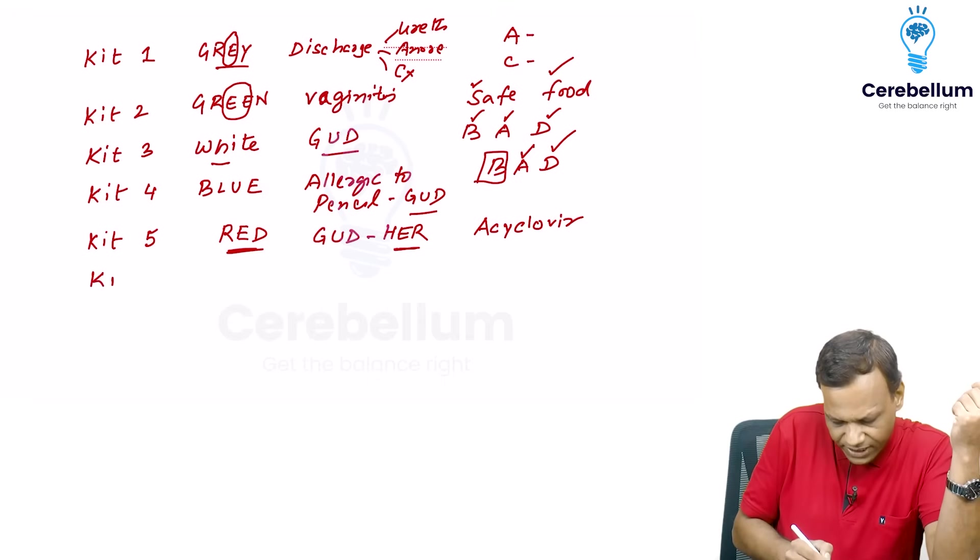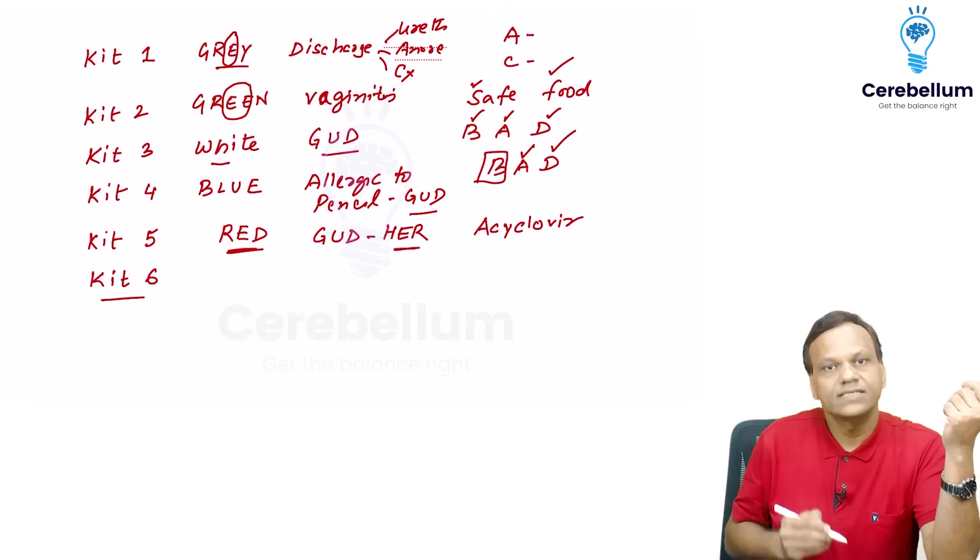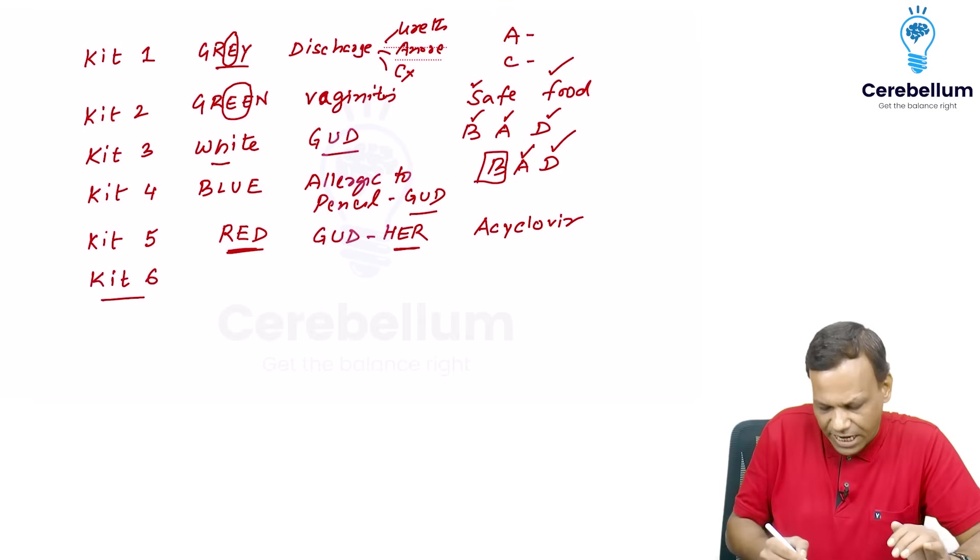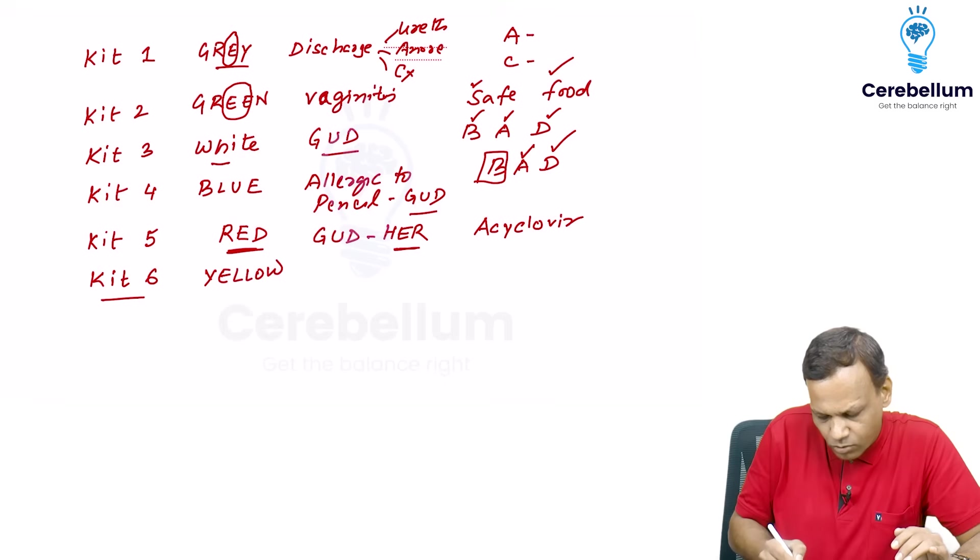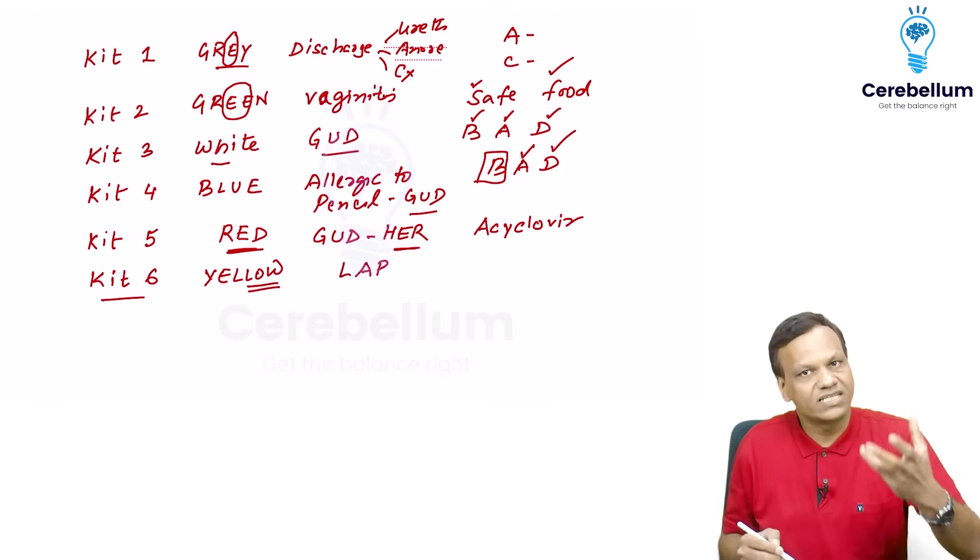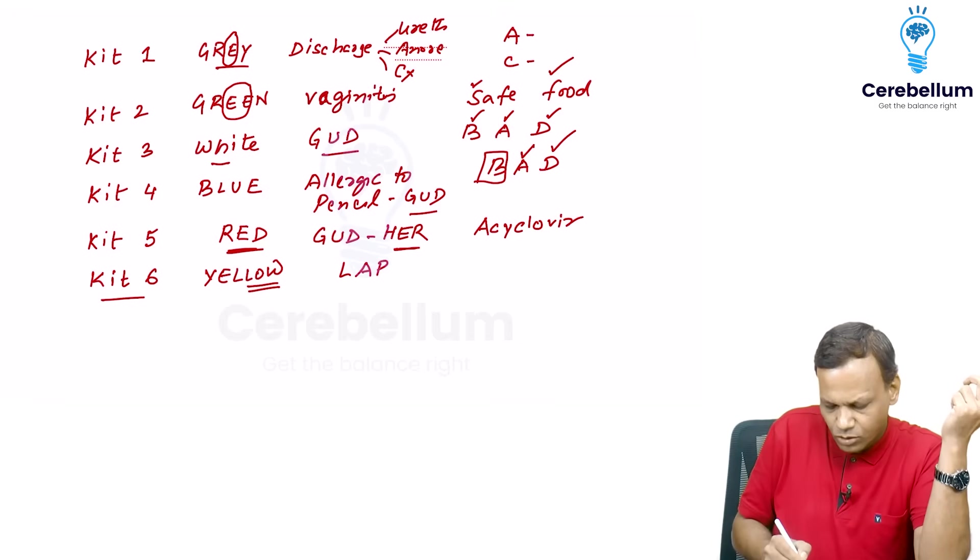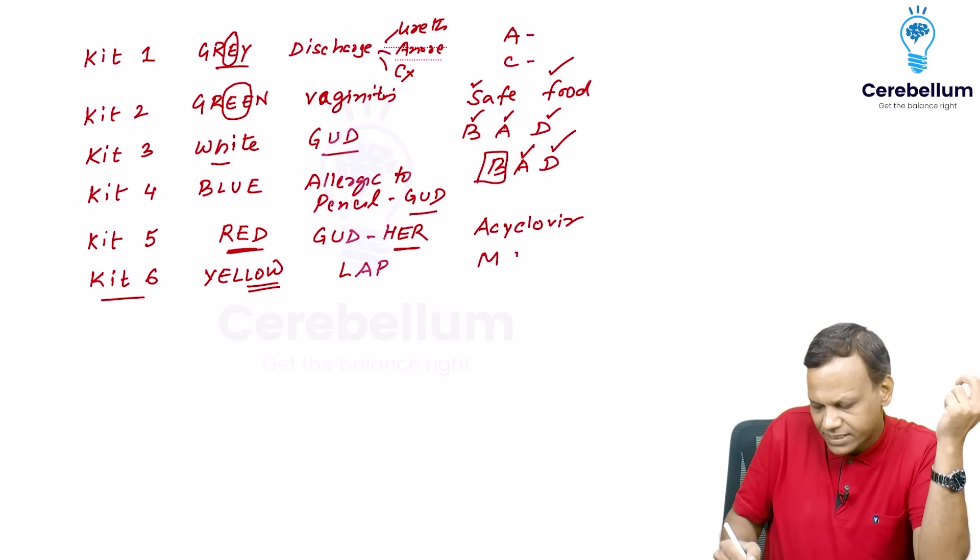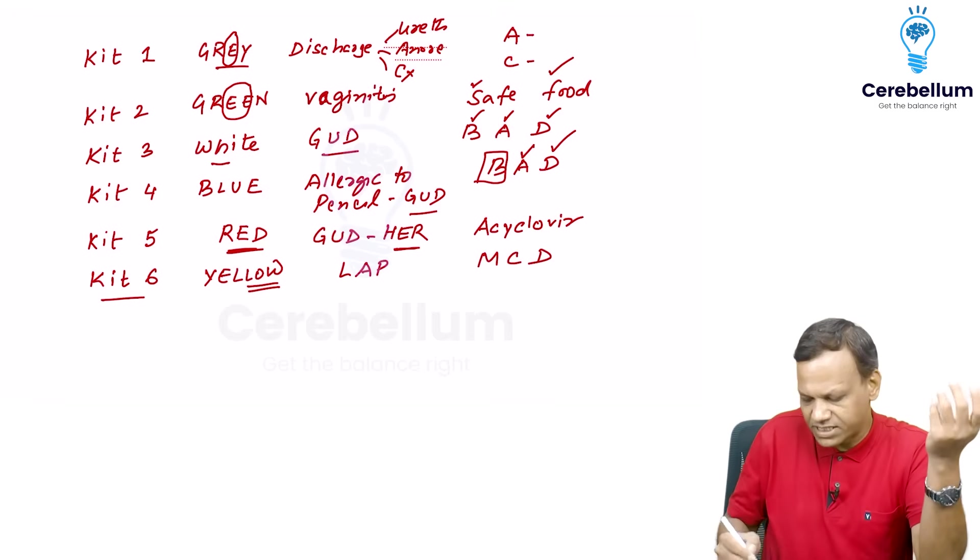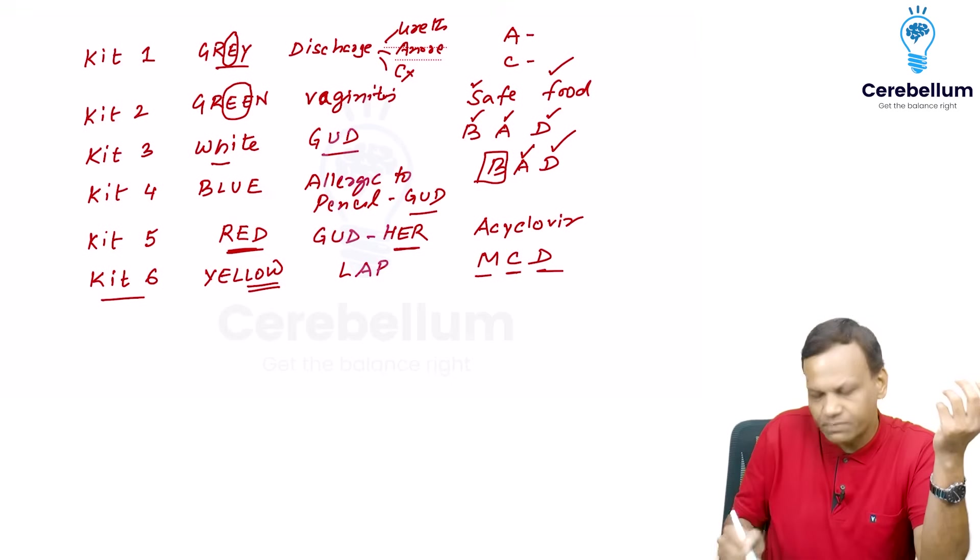Then coming to kit 6. Kit 6 is for yellow. Remember yellow contains 6 letters. Yellow. So when it is low means it is for lower abdominal pain. Or we can say pelvic inflammatory disease. So it is treated by MCD. Because yellow color wastage MCD. Metronidazole, cefixime and doxycycline.